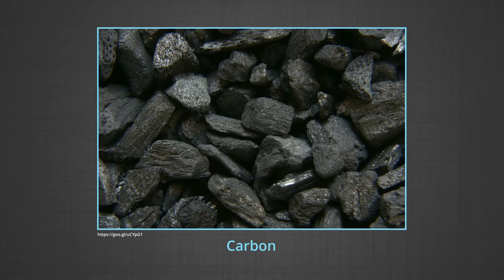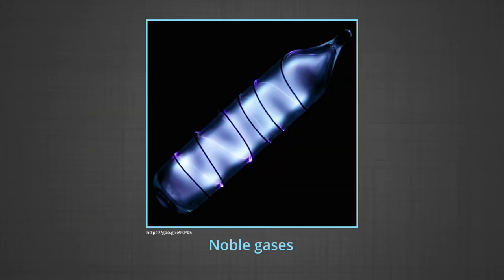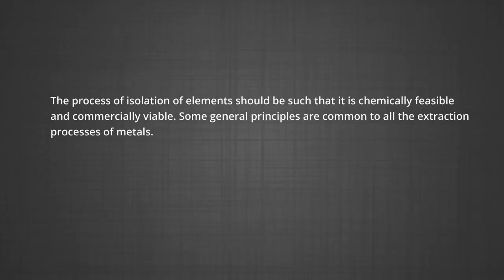A few elements like carbon, sulphur, gold and noble gases occur in free state, while others occur in combined forms in the earth's crust. The extraction and isolation of an element from its combined form involves various principles of chemistry. A particular element may occur in a variety of compounds. The processes of isolation of elements should be such that they are chemically feasible and commercially viable. Some general principles are common to all the extraction processes of metals.